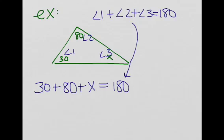Okay, so 30 plus 80 plus x is equal to 180. And so we'll simplify it on the left hand side. So we have 110 plus x is equal to 180.